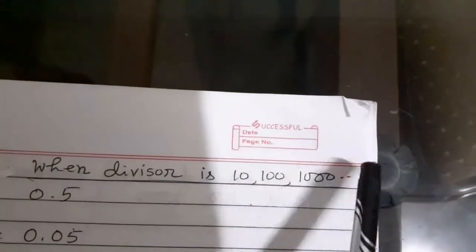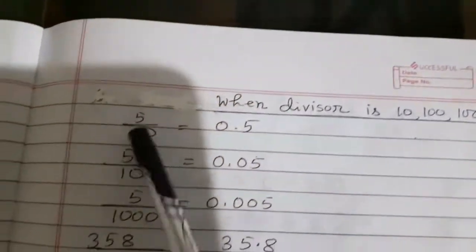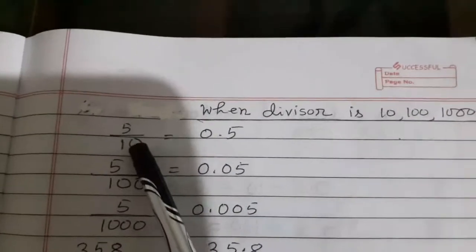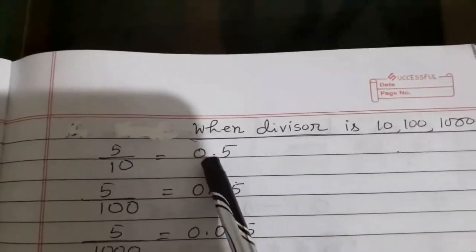When division is 10, 100, 1000, etc. Suppose 5 by 10. 5 by 10, here one zero, therefore point before one digit.